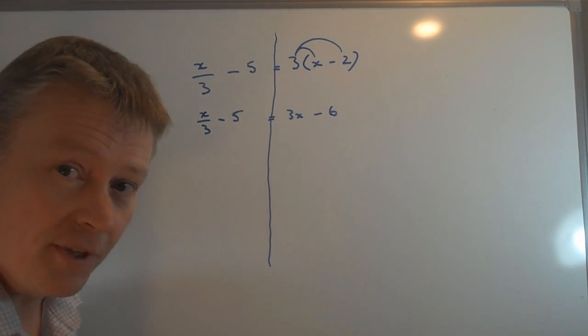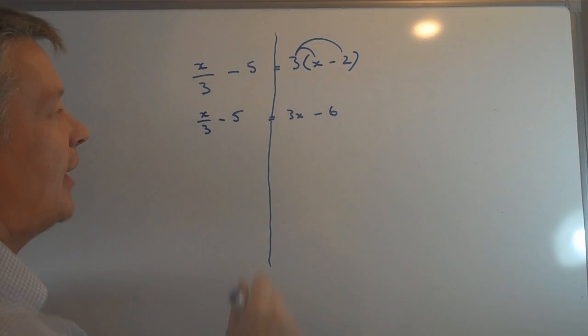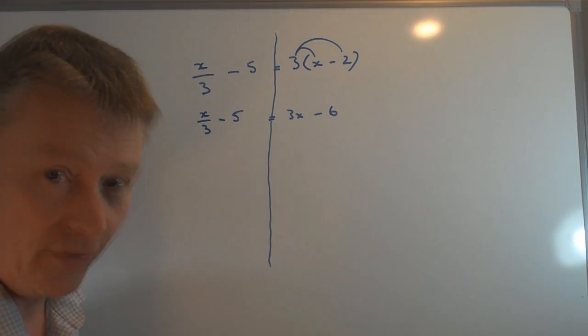So I'm in a position now where I have x over 3 minus 5 and 3x minus 6 on this side.